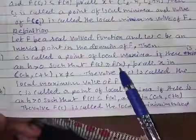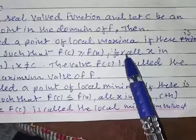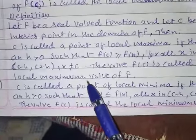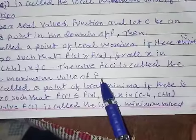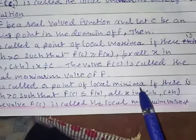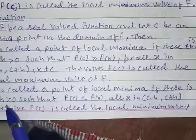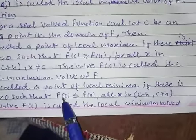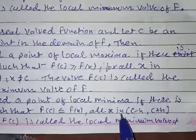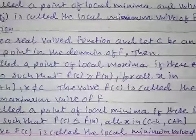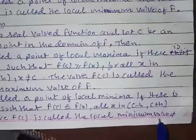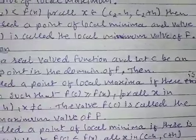And c is a point of local minima if there exists h greater than 0 such that f(c) is less than or equal to f(x) for all x in (c - h, c + h). The value f(c) is called the local minimum value of f.